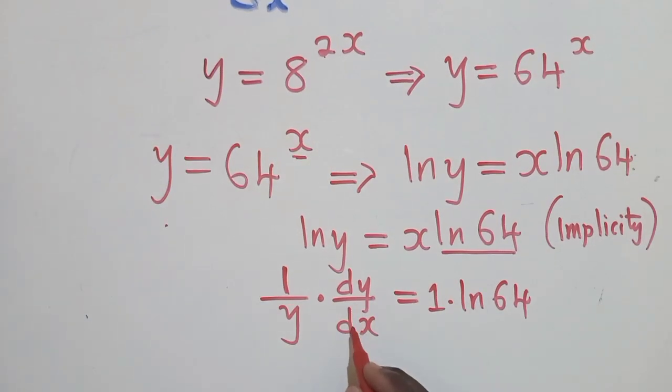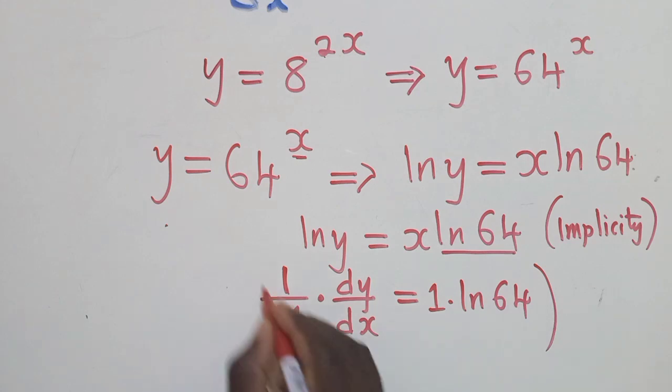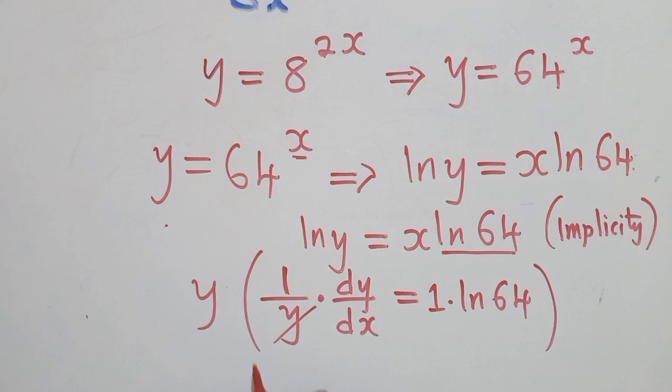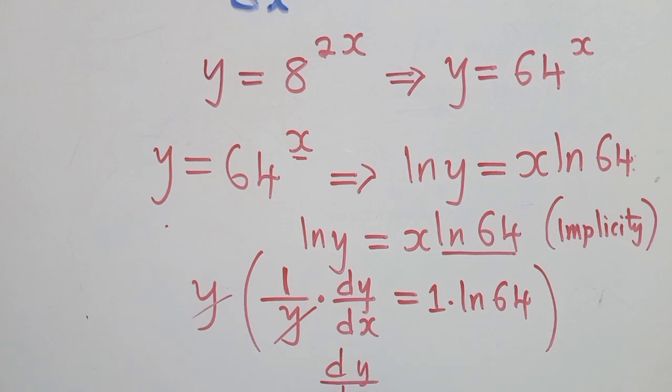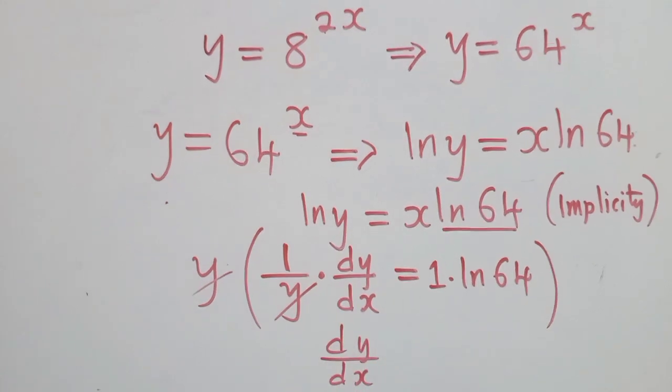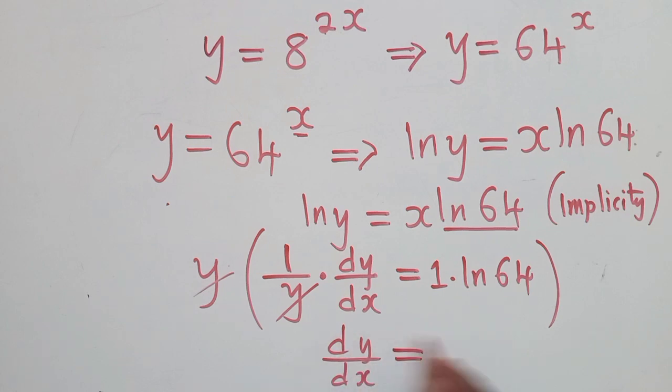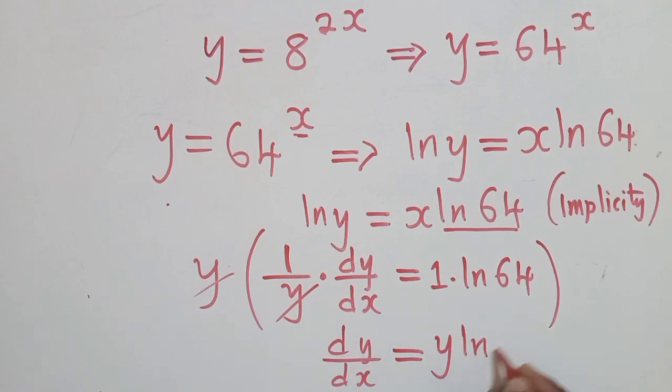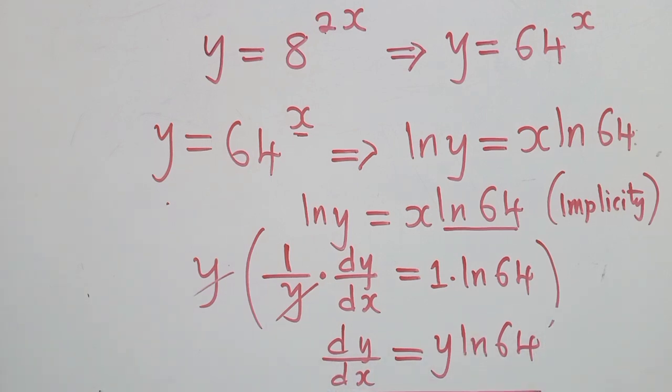We're almost there. So now we make dy/dx subject of the formula. We shall multiply throughout by y. We want to cancel this y. So this y and the y will cancel. Again, this y multiplied by what is here. We shall remain here with dy/dx. dy/dx is equal to y ln 64. And this is our solution.